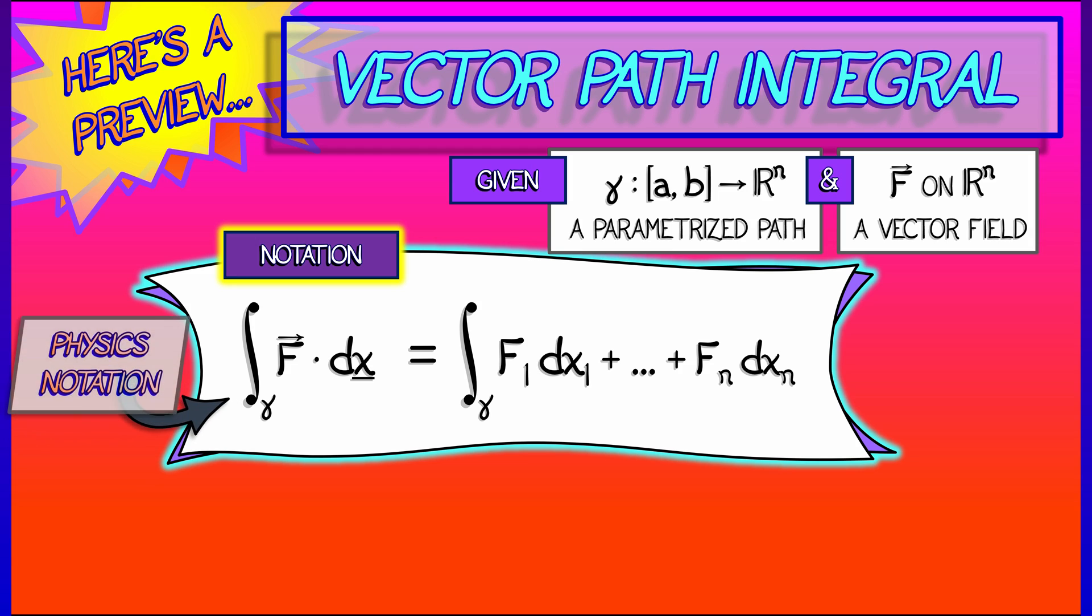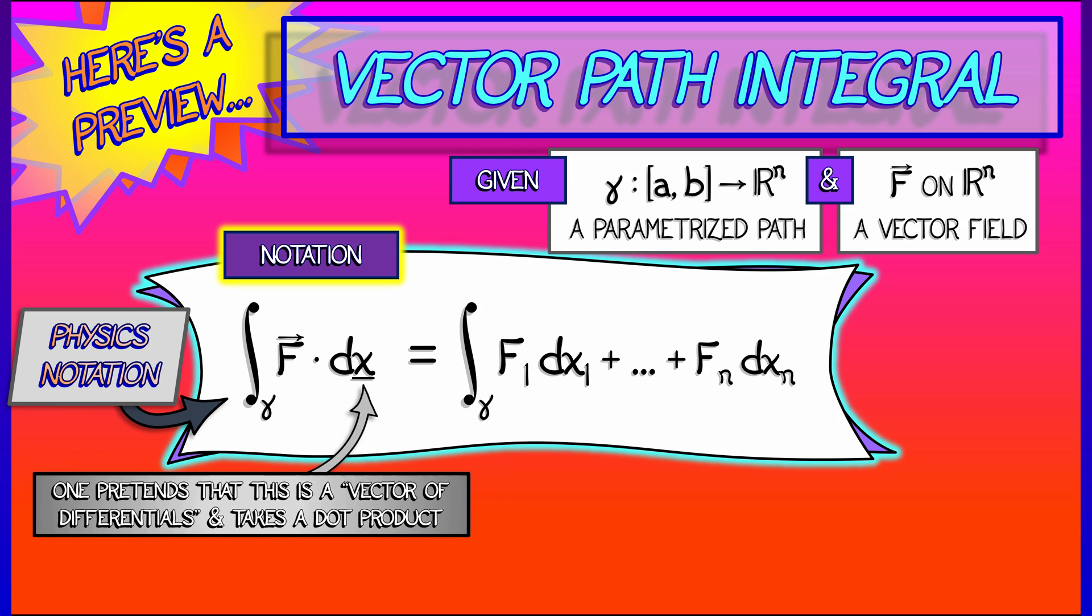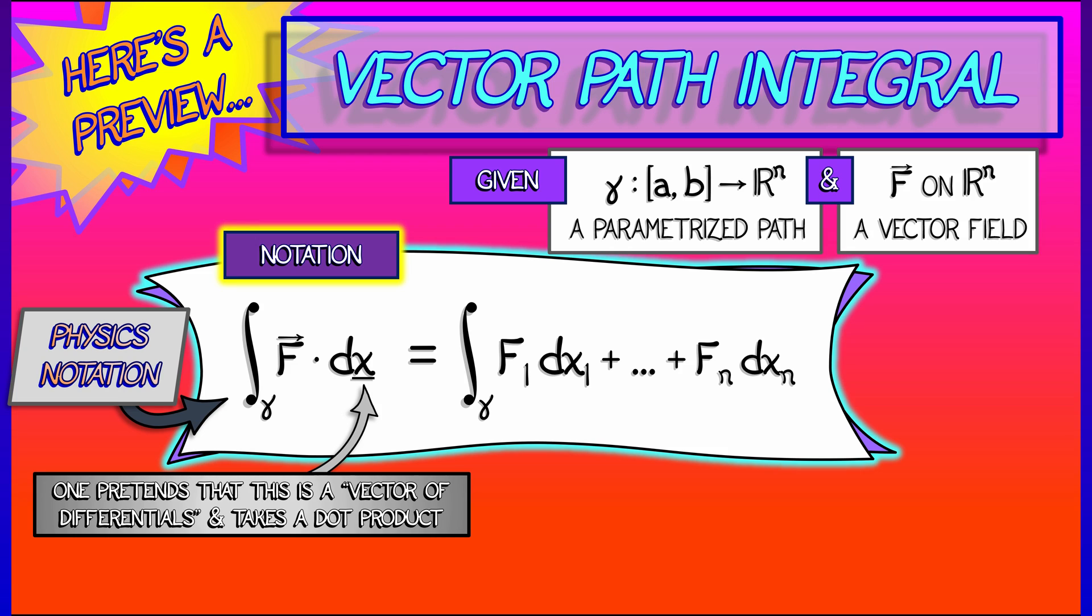Now, that's sort of old fashioned physics notation. What that dx means is you look at all the differentials, dx1, dx2, all the way up through dx_n, and then you stack them into a vector of differentials and call it dx. You take the dot product of that unusual object with the vector field F.